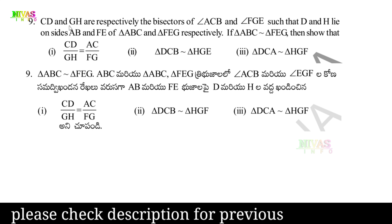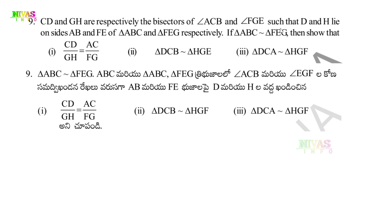Question number 9: CD and GH are respectively the bisectors of angle ACB and angle FGE, such that D and H lie on the sides AB and FE of triangle ABC and triangle FEG respectively. If triangle ABC is similar to triangle FEG, then show the following three things.